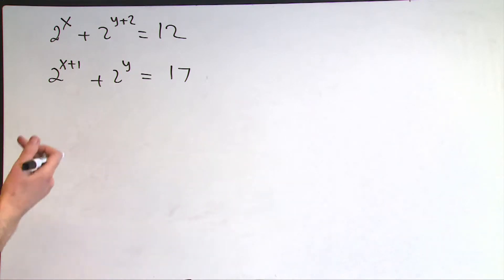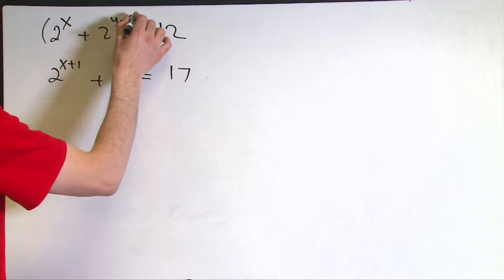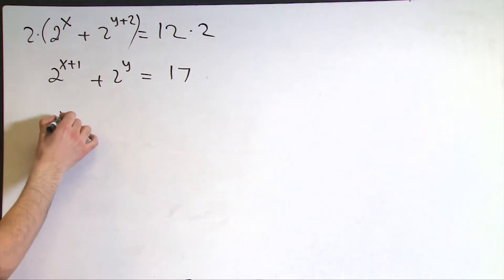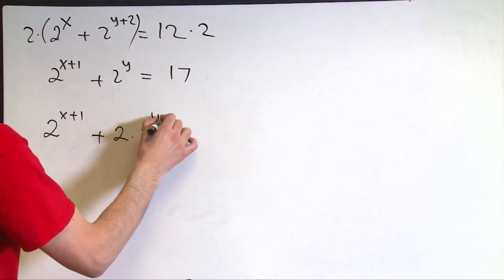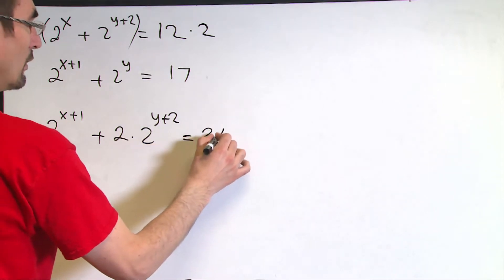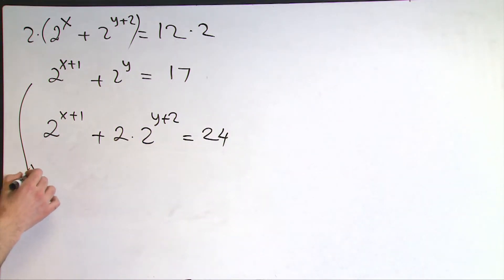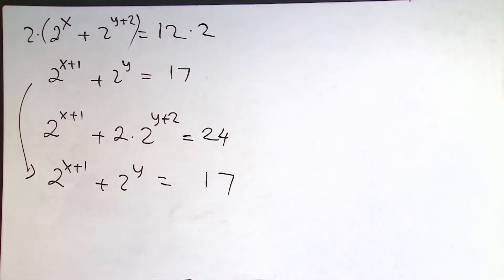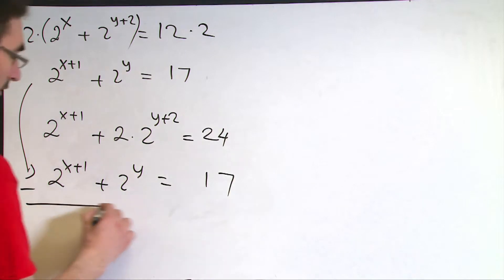So I would like to multiply both sides of this first equation by 2. This will give me 2 to the power x plus 1 plus 2 times 2 to the power y plus 2 equals 24. And I would like to rewrite the same equation transferred here: 2 to the power x plus 1 plus 2 to the power y equals 17.